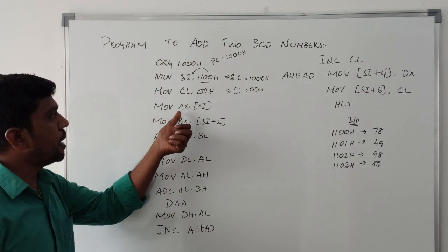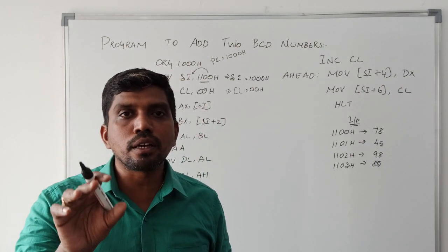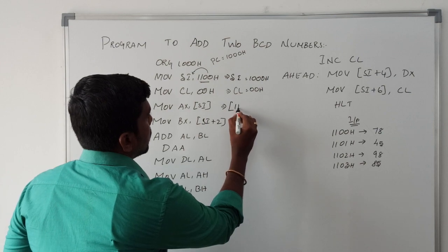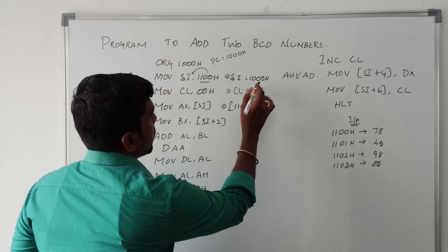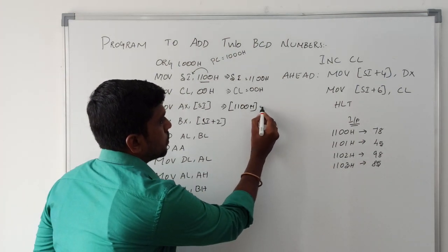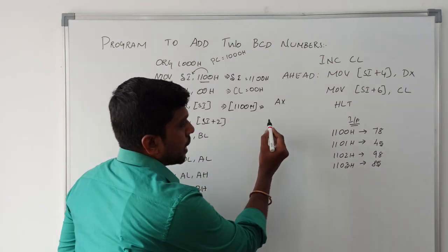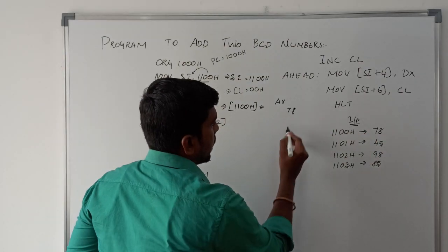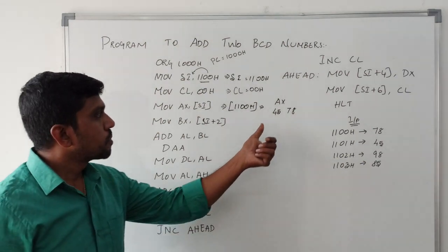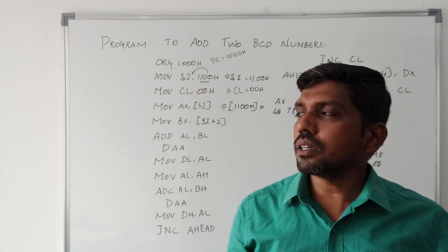MOV AX, [SI] — within brackets, any register mentioned means that register holds the address location, so whatever data is present at that address is transferred to the register. SI holds memory location 2100H. After execution, the 16-bit value is transferred to AX. The first address location has 78H loaded into AL, and the next memory location has 45H loaded into AH, so the 16-bit value 4578H is stored in the accumulator register. So far you have got the first data.